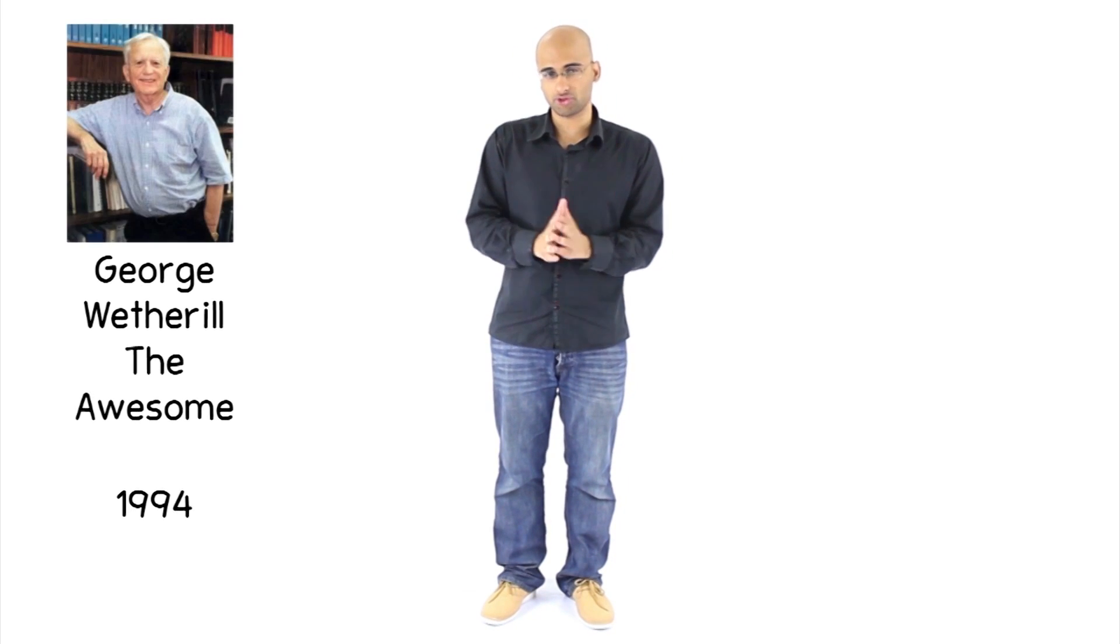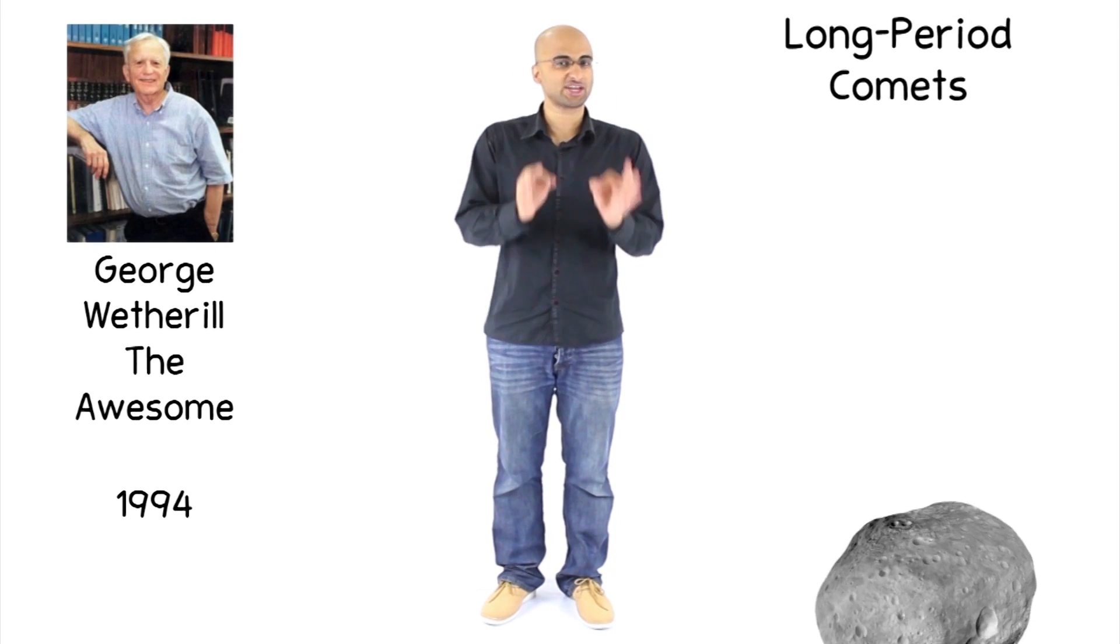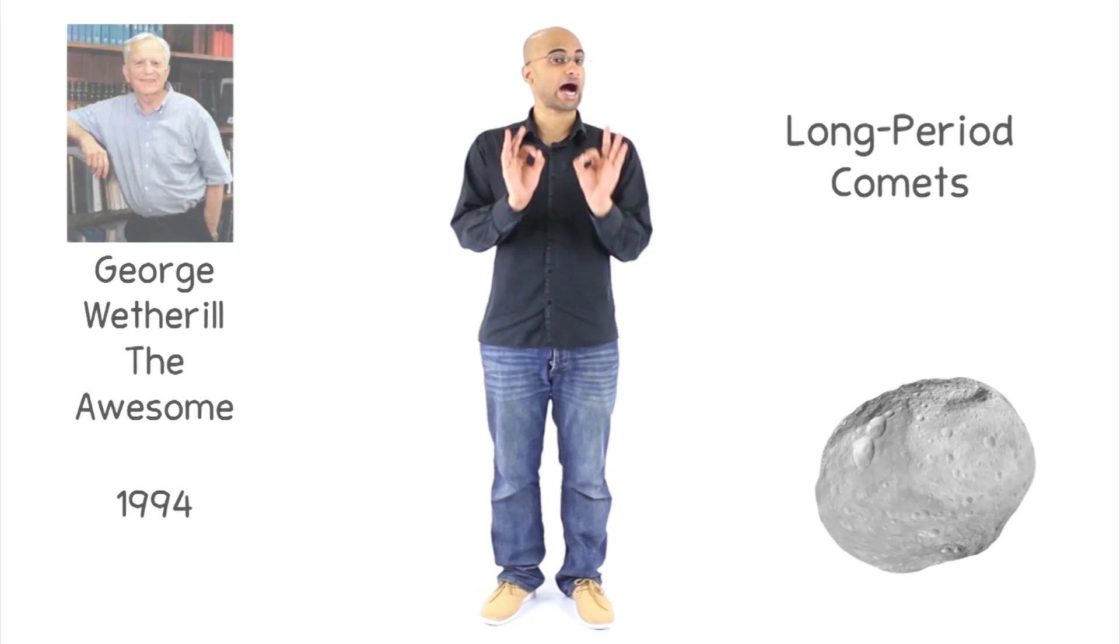You see, the idea that Jupiter, through its unbelievably strong gravitational field, would take comets in and then throw them out of Earth's way outside the solar system was cemented in 1994 by planetary scientist George Witherell. But that was only for something called long period comets.